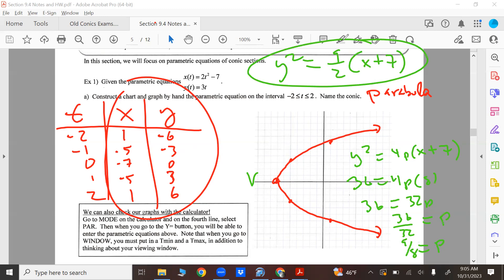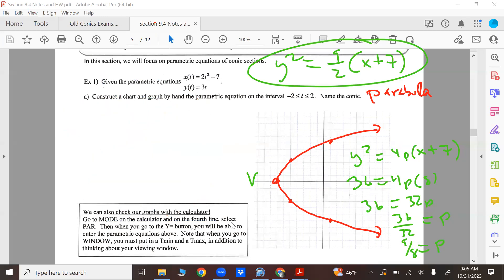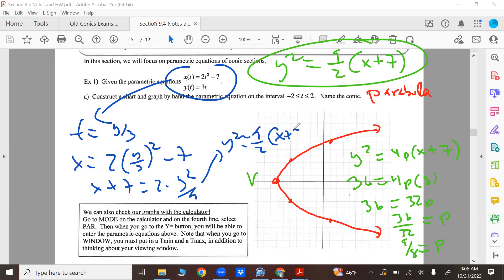So the equation should be y squared equals nine-halves x plus 7. But I could also have done it, as Yuvia is saying, by substitution, right? I could also... So I'm doing part B, by the way, because I just don't have space. I don't want to move my screen. But you could also have done this, too. You could say T equals what? Y over 3, right? So x equals 2 times y over 3 squared minus 7. x plus 7 equals 2 times y squared over 9. y squared is nine-halves x plus 7. Same thing.